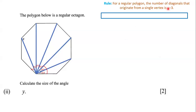In this case, n is 8 because we're dealing with an octagon. So each vertex of the octagon has 8 minus 3, which equals 5 diagonals. That means at each vertex, we can draw 5 diagonals. From this vertex, we draw 5 diagonals. According to the rule, we can draw 5 diagonals from each vertex, but we really want to focus on this vertex because we're trying to find the size of angle y.